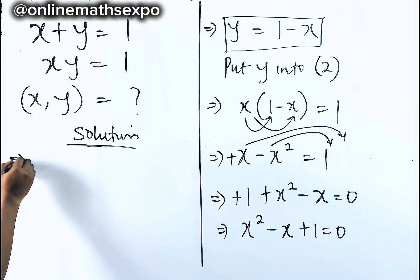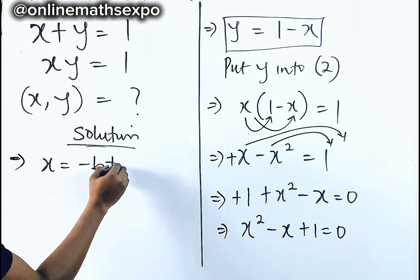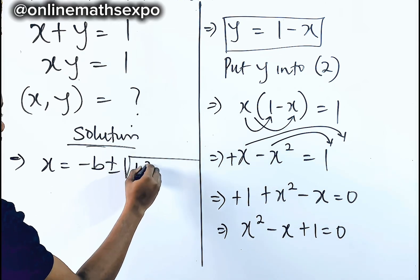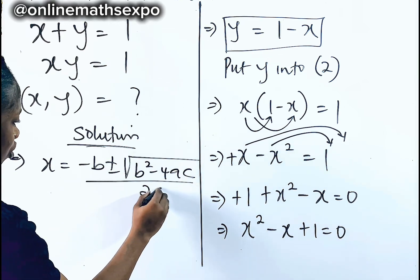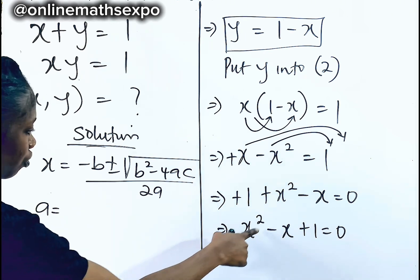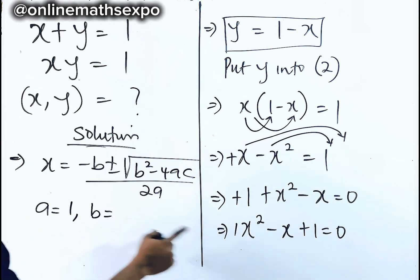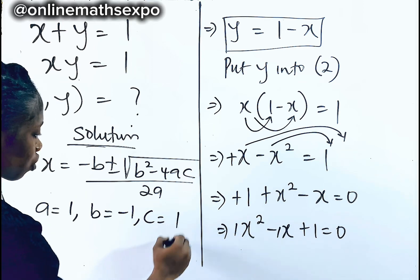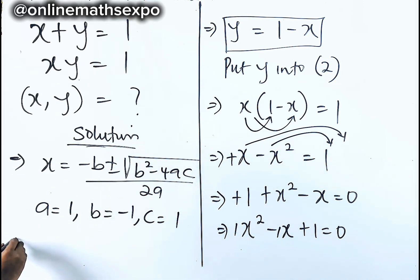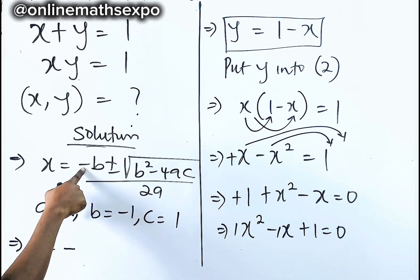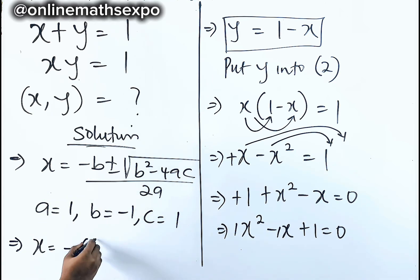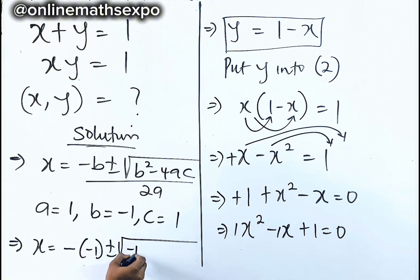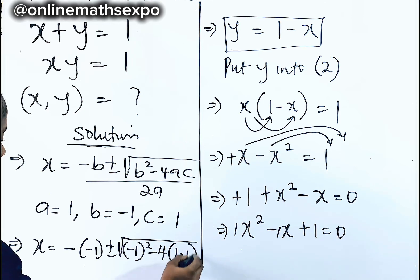Using the formula, x equals negative b plus or minus the square root of b squared minus 4ac, divided by 2a. Our a is the coefficient of x squared, which is 1; b is the coefficient of x, which is negative 1; and our c is the constant, which is 1. Plugging in: x equals negative of negative 1, plus or minus the square root of negative 1 squared minus 4 times 1 times 1, divided by 2 times 1.